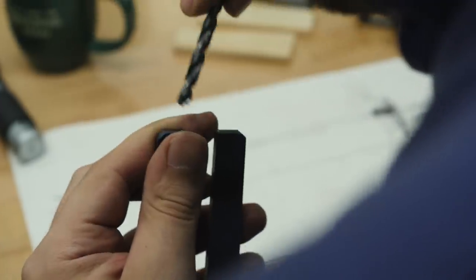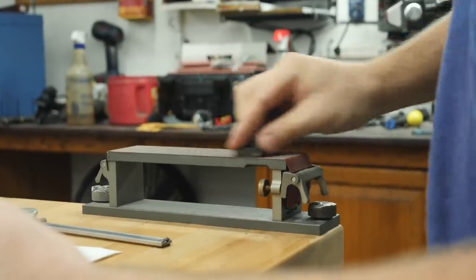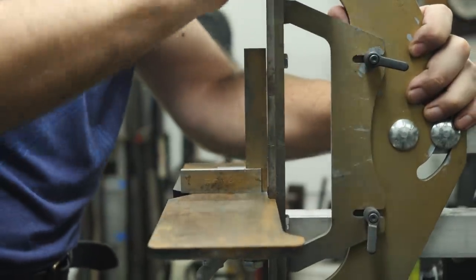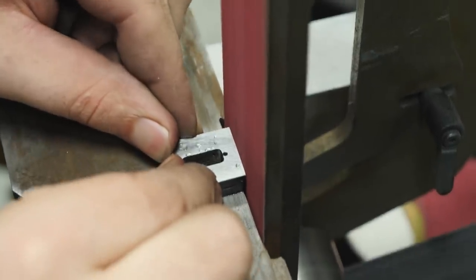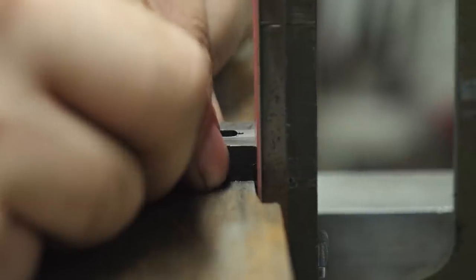I deburr the holes and clean up the parts to make sure I get rid of any of that burnt superglue. Then we can move on to grinding the top and bottom of the ricasso to shape. I oversized the top and bottom of the front spacer so now we can grind it down to the proper size. I want it the same size as the ricasso.